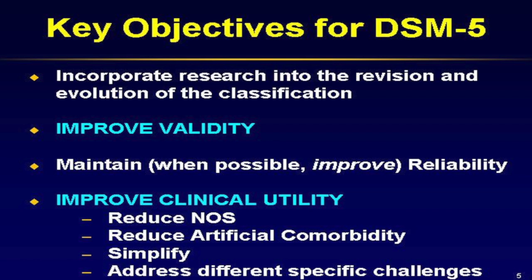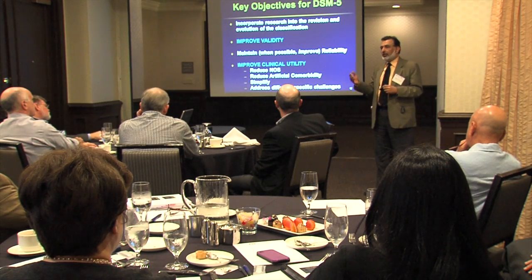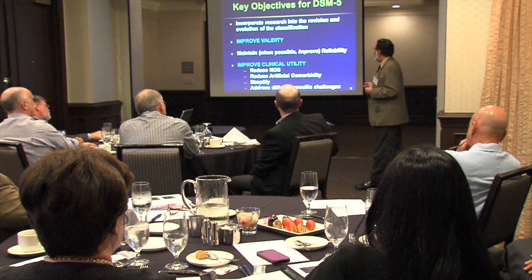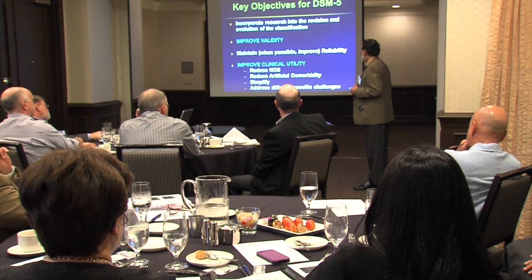Another problem is the large number of 'not otherwise specified' diagnoses. My assumption is about 30% of diagnoses, if not more, are NOS. NOS is not a particularly useful term — it's okay to say you don't have enough information for a definitive diagnosis, but when NOS stays for a year or 10 years, that's a problem. You should be able to define what the problem is over time as you gather information.